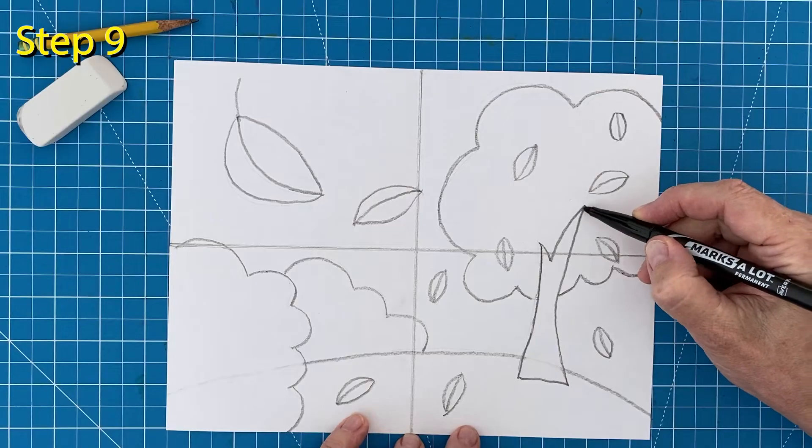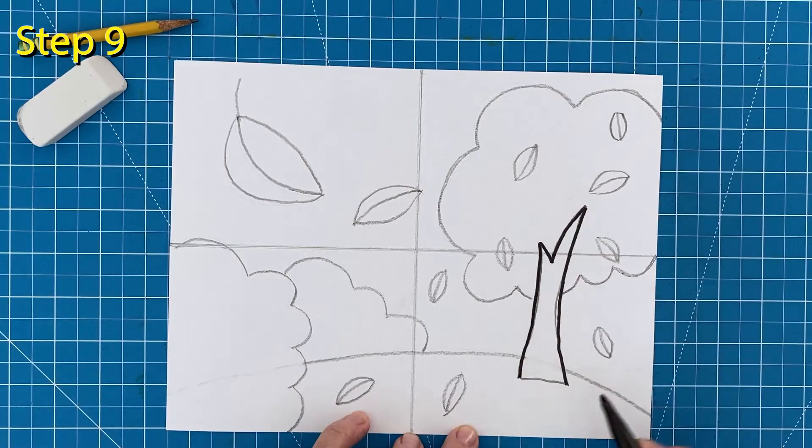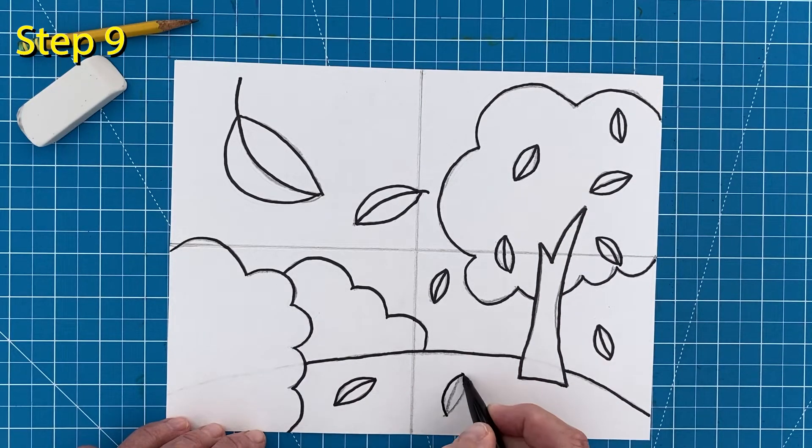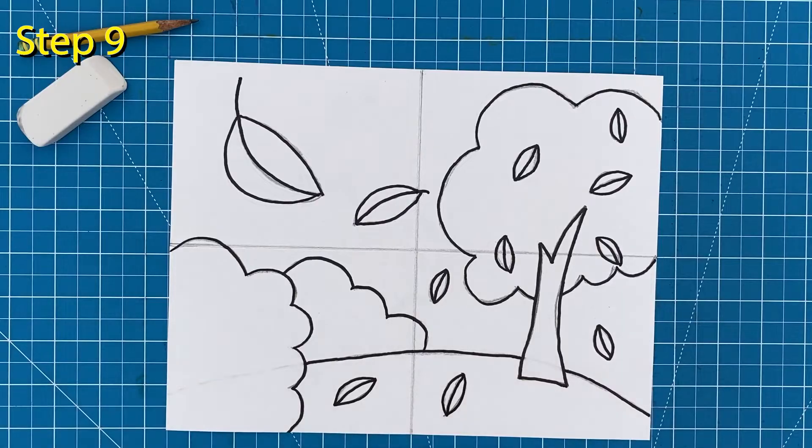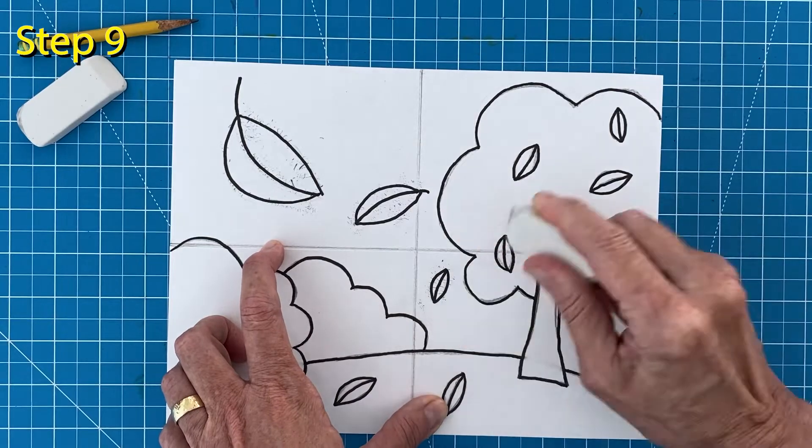Step number nine. Okay the drawing is done so it's time to trace all those pencil lines with a black marker. All these dark lines will make this drawing easier to see and color. Take a minute or two now to erase any extra pencil lines that are still showing up.